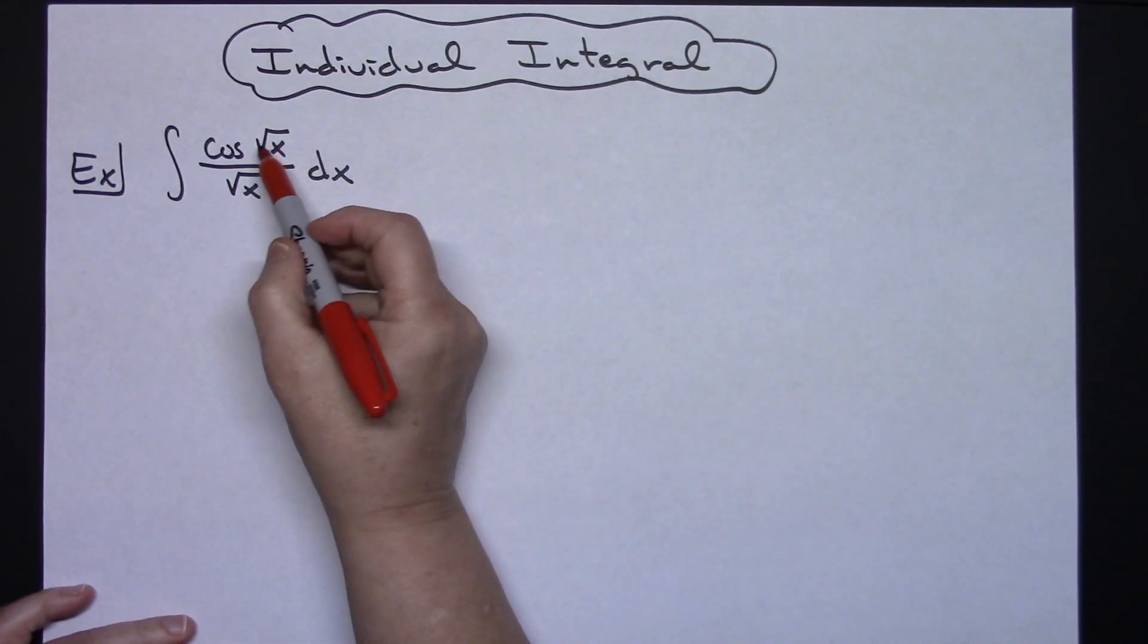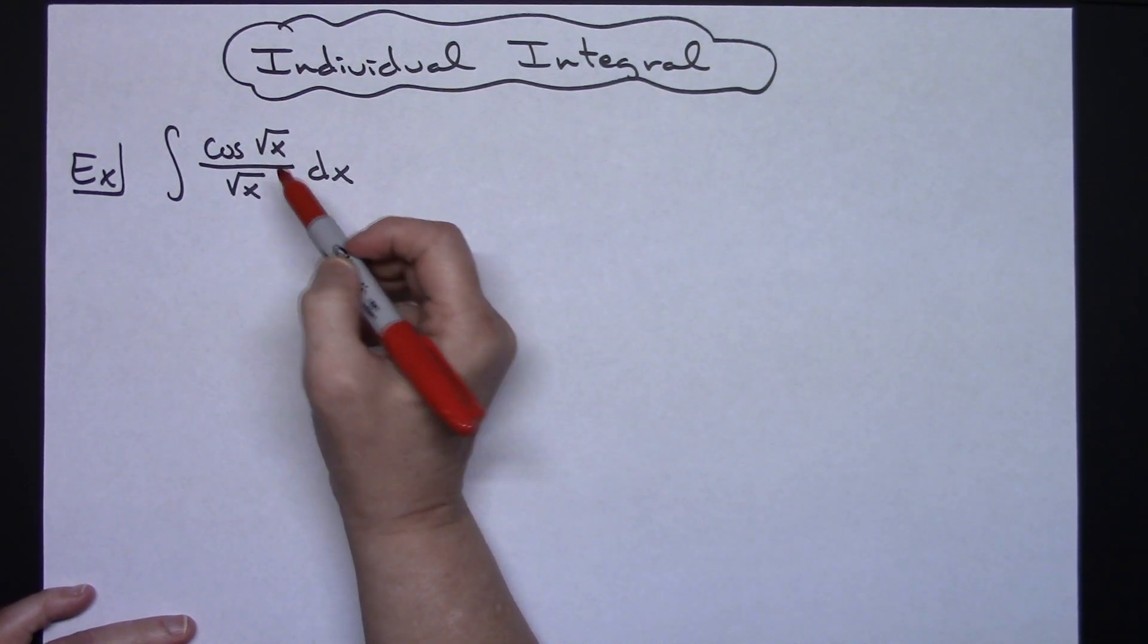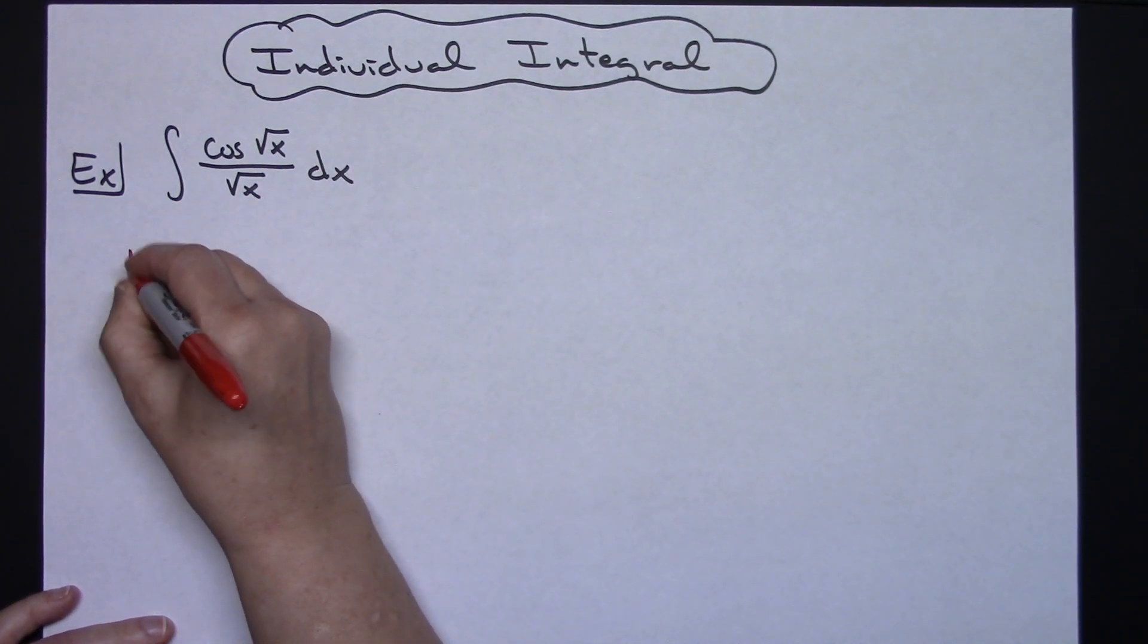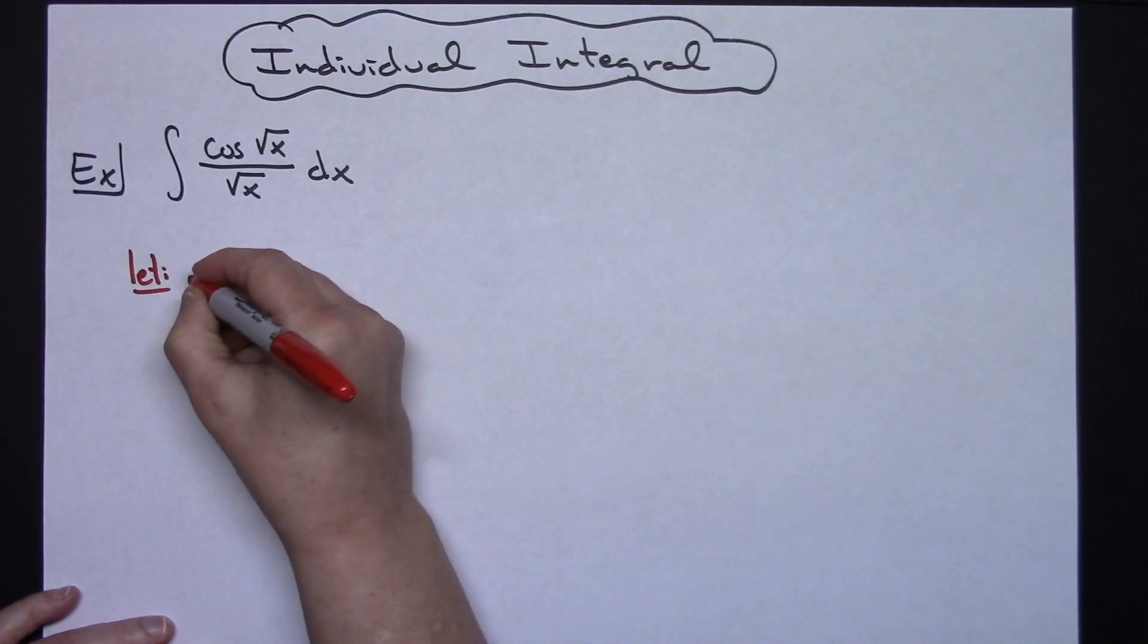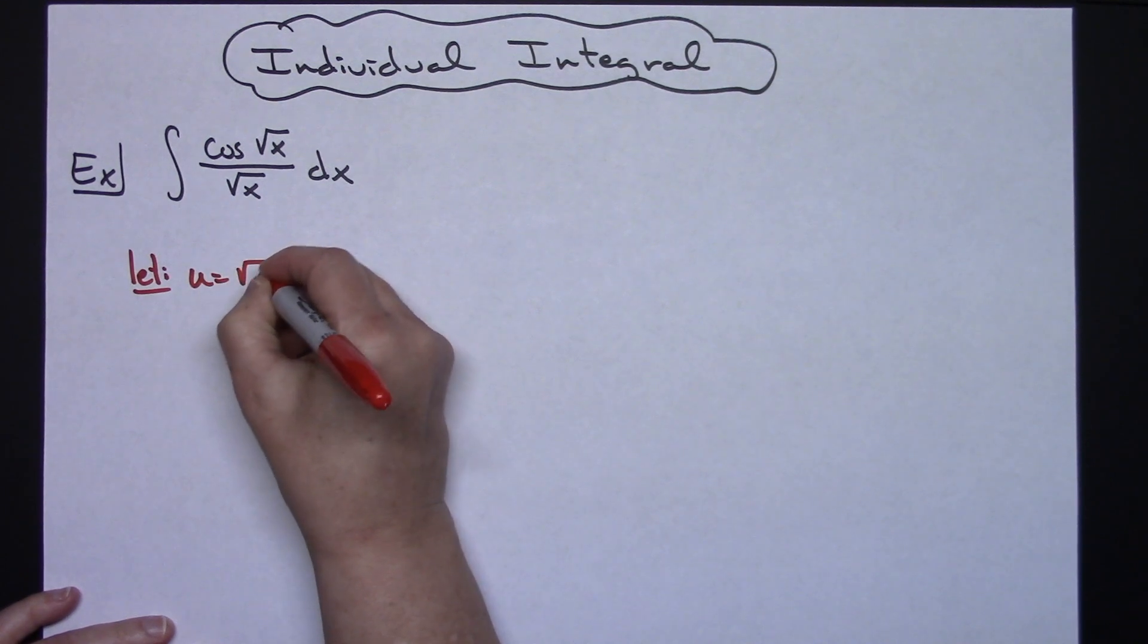So we're going to start with looking at our function and finding the innermost part. Cosine of square root of x makes that square root of x the inside, so that's what I'm going to let u equal. We're going to let u equal square root of x.